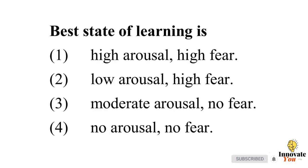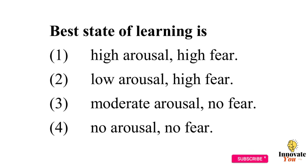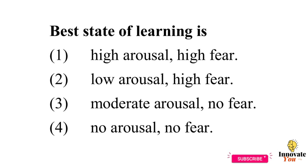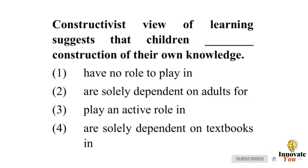Question 4: Best state of learning is — Option 1: High arousal, high fear. Option 2: Low arousal, high fear. Option 3: Moderate arousal, no fear. Option 4: No arousal, no fear. Answer: 3 — Moderate arousal, no fear.